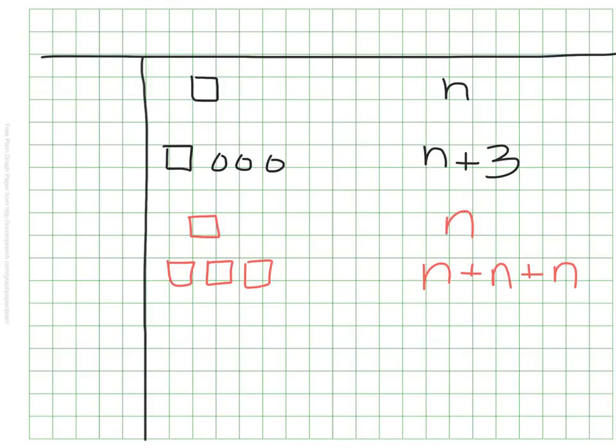Remember earlier, I said that we can't use our X anymore. That would be confusing if we said we had three times N. That gets a little bit funny looking, so we don't do that. Instead, in algebra, we shorten things, and if we want three times N, we can just squish our three right next to our N, and that would represent the N three times.